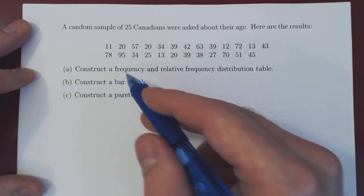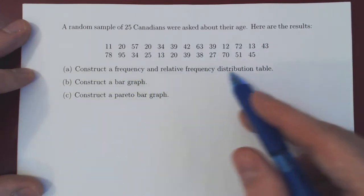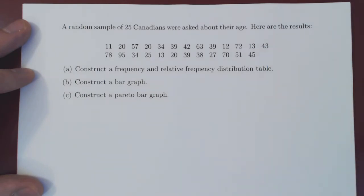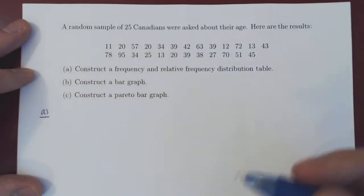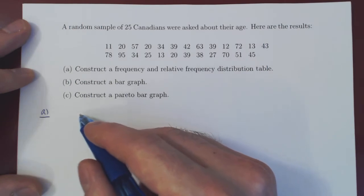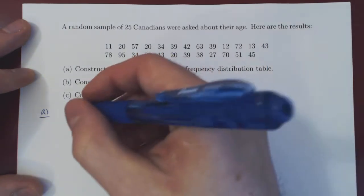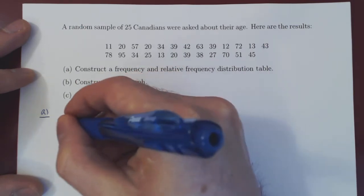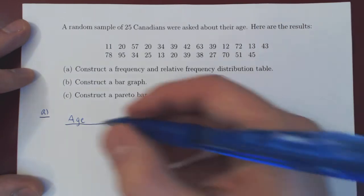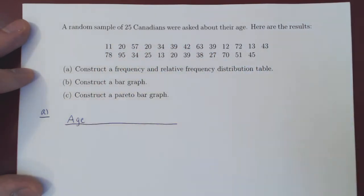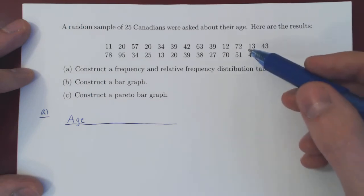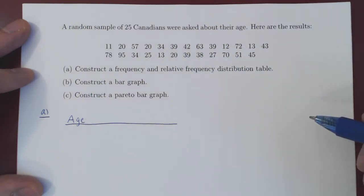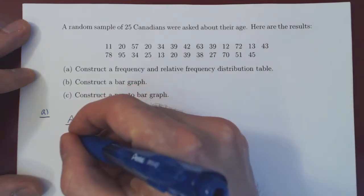So part A, we want to construct a frequency and relative frequency distribution table. We can accomplish this in just one table, one column for the frequency, and one column for the relative frequency. Okay, every time you construct a table, you should have a title, and here I'll be lazy, but you could write as a title here, distribution of Canadians' age. So the first column would be the age.